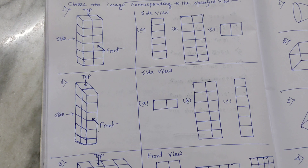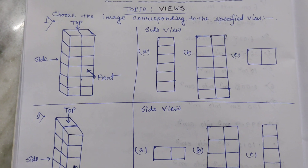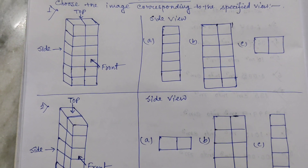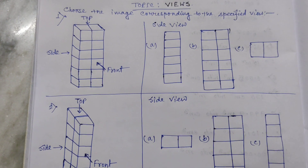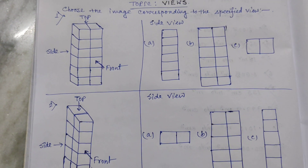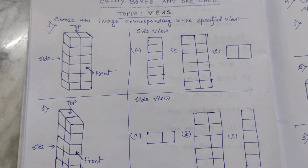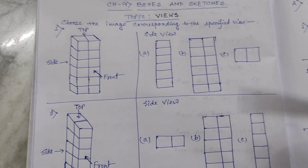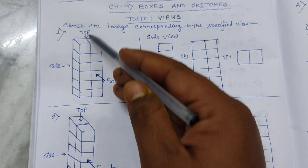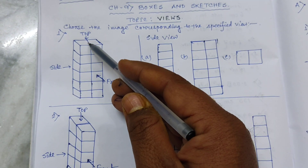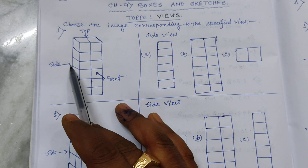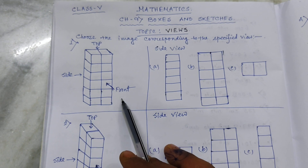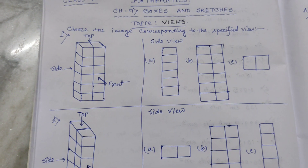But its views from different sides look like a two-dimensional figure. In each figure there are three views: top view, side view, and front view. Top view is when I look at any object from the top. Side view is when you look at the object from the side. And front view is when I look at the object from the front. So three different views are there.